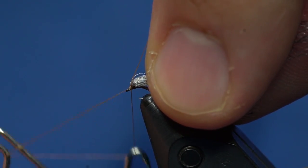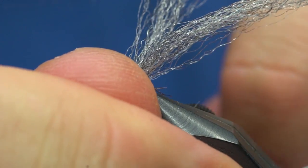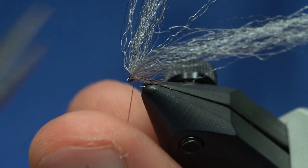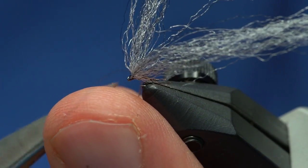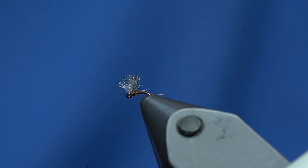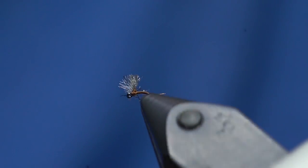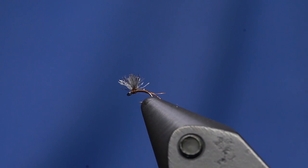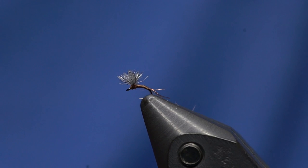I'll trim off my thread, then I just pull the wings straight up and trim those roughly the length of the body. And there you go, a size 30 bunny midge. Super effective and you can tie them in a ton of different colors.